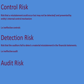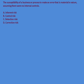Audit risk is the sum total of inherent risk, control risk, and detection risk. Let us discuss some questions to get the concepts more clear. For example: a business process makes an error that is material in nature, assuming there were no internal controls. When there are no internal controls, this is inherent risk.